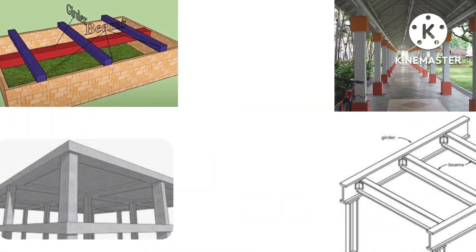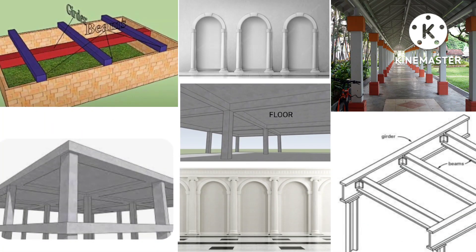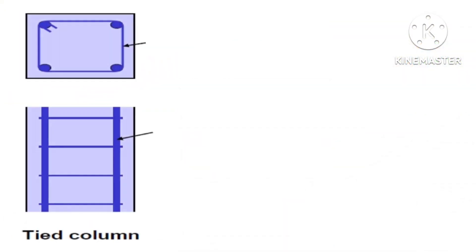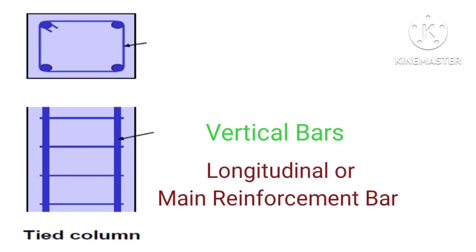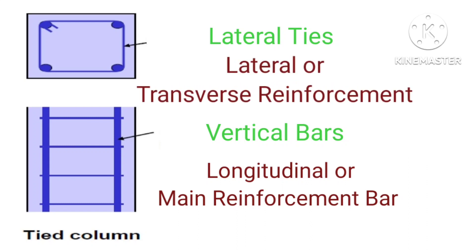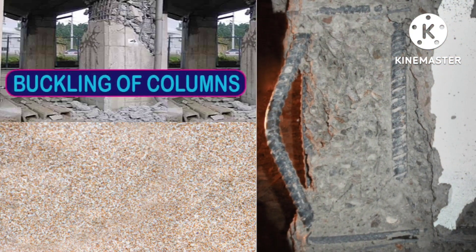The chief purpose of a column is to support a beam or girder, floor or roof, and also an arch. It has reinforcements consisting of vertical bars called longitudinal or main reinforcement bars, held in position by lateral reinforcement or transverse reinforcement called lateral ties. These lateral ties prevent the main reinforcing bar from buckling.